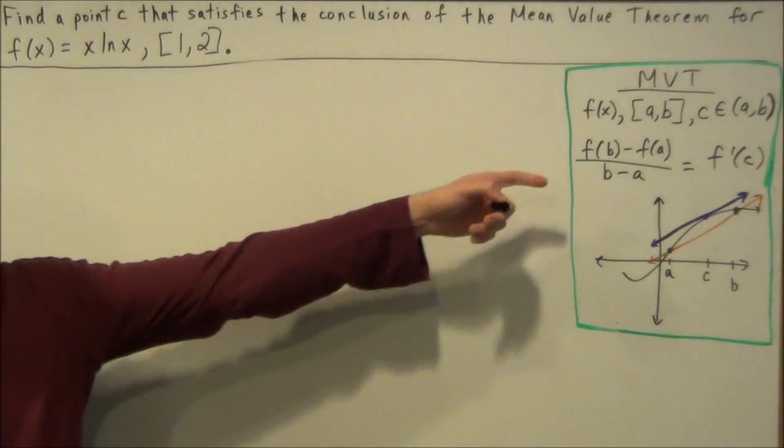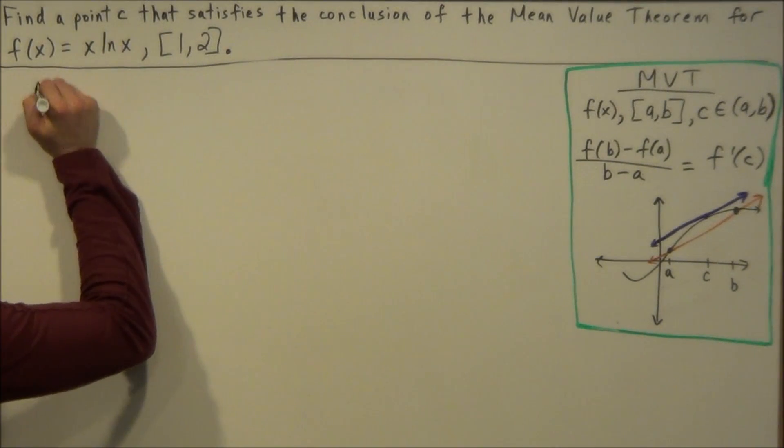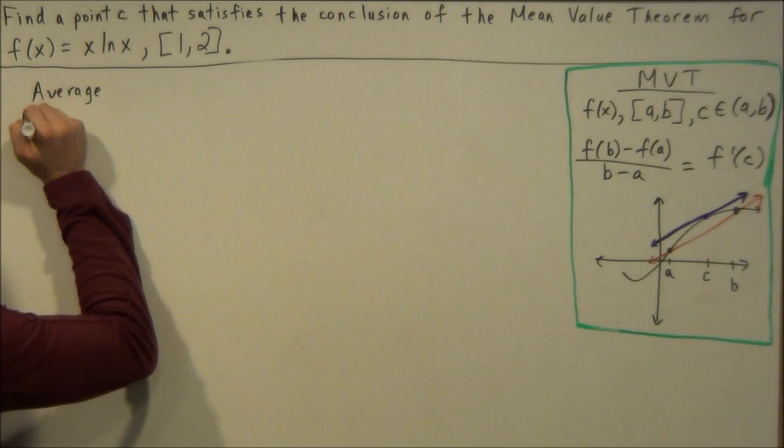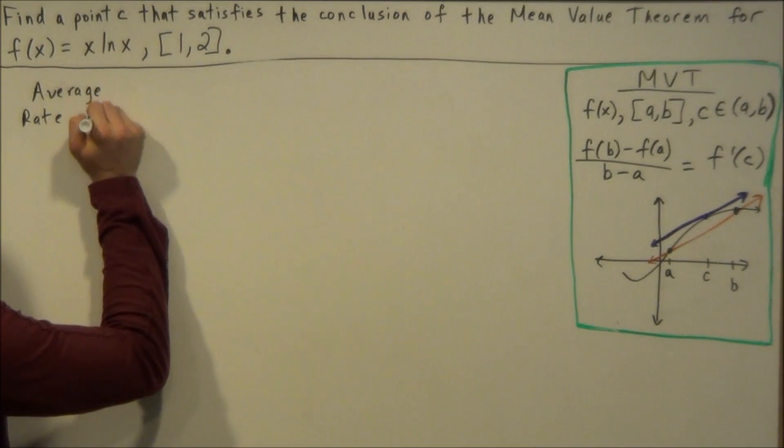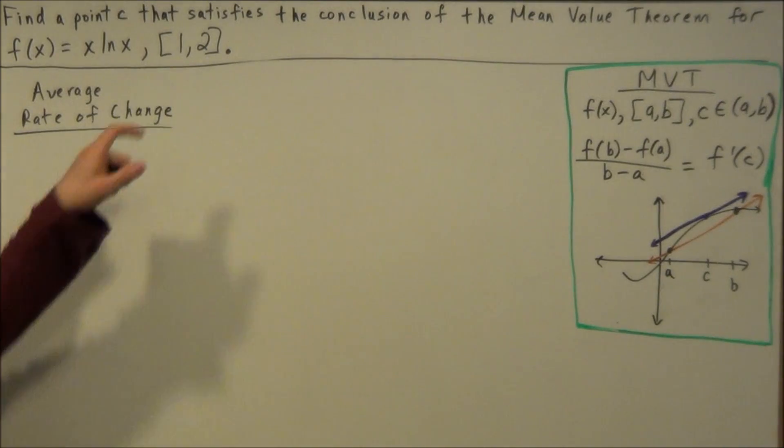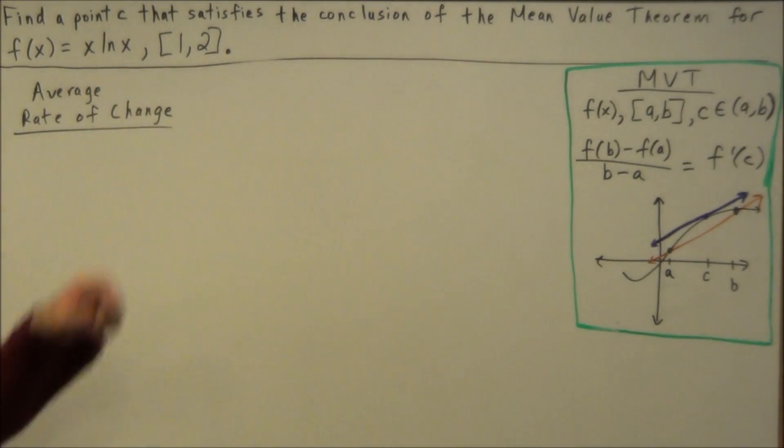So to apply this theorem here, we need to find the average rate of change for our function f(x). So we're looking for the average rate of change. And remember, this theorem does apply to this problem because our function is continuous on this closed interval here and differentiable on the open interval between 1 and 2.